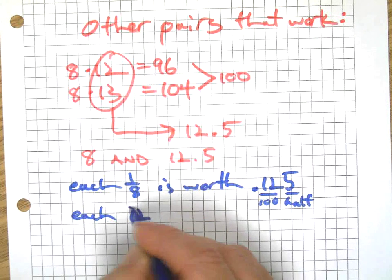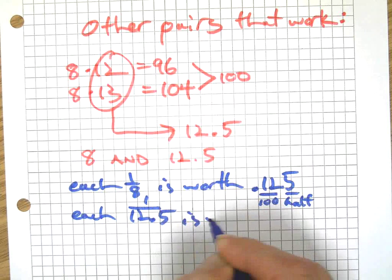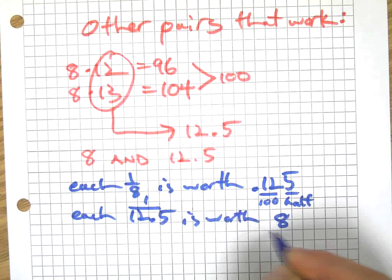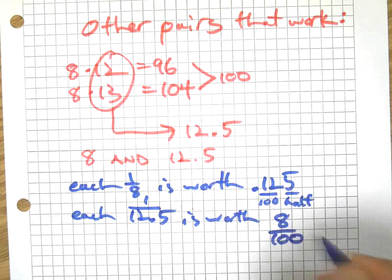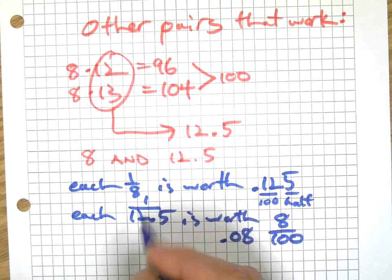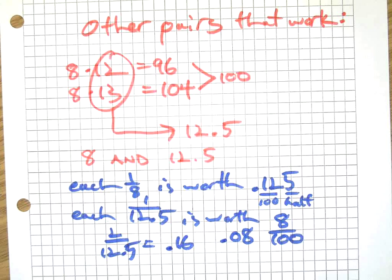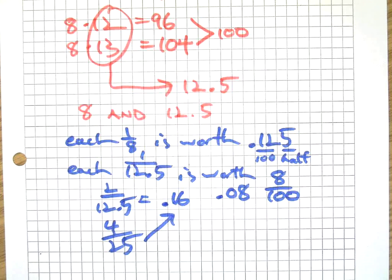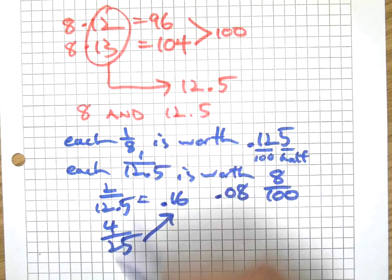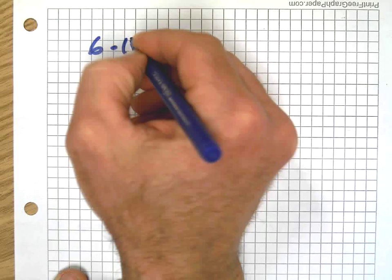And each one over 12.5 is worth 8 hundredths. What this means is if I have two over 12.5, then I'm going to have 16 hundredths, which is the same as saying four-twenty-fifths. Four quarters, which we already knew. Four-twenty-fifths.